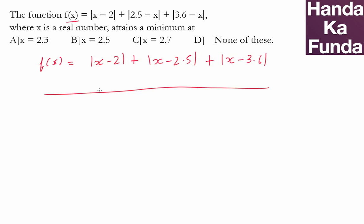So I'm just randomly marking 2, 2.5, and 3.6. Marking them on a number line is essentially arranging them in an increasing order. The function will be minimum at the middle value.